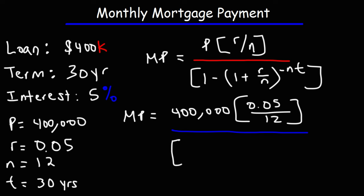And then that's going to be divided by 1 minus 1 plus R over N. So 0.05 over 12, raised to the negative, don't forget that negative sign, N is 12, and then times T, or times 30.